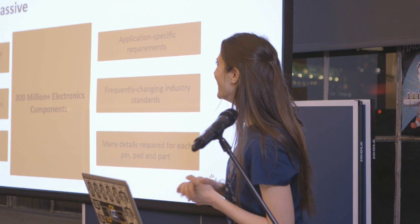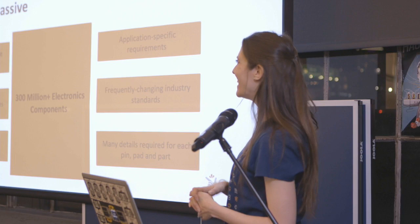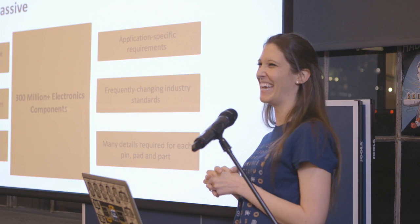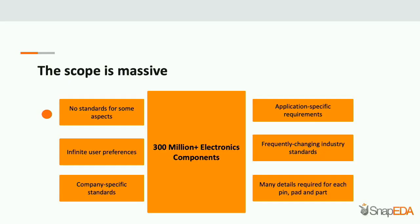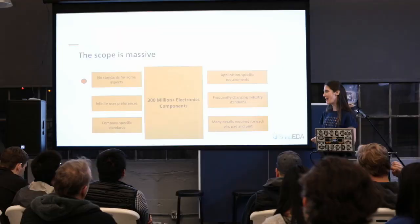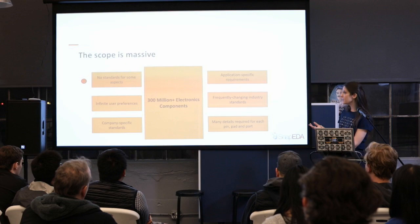The challenge is that standards don't define everything. They're not going to define things like pin placement on an IC — whether pins need to be on the left versus the right — or silkscreen widths, where there's a lot of engineer preference. The other reason this is a hard problem to solve is that the scope is massive — hundreds of millions of components, no standards for many aspects of library creation, companies making their own standards, infinite user preferences, and application-specific requirements that change land pattern dimensioning.